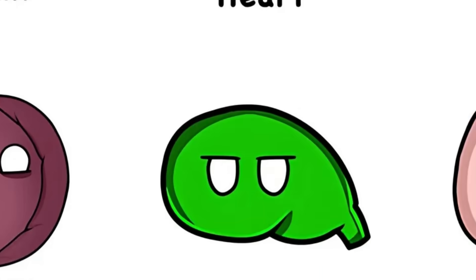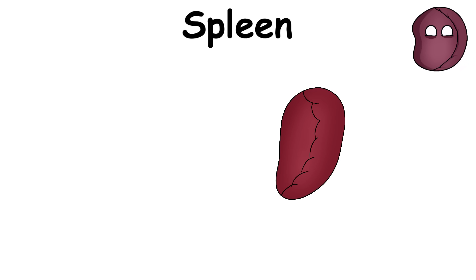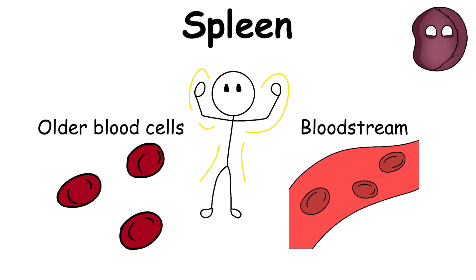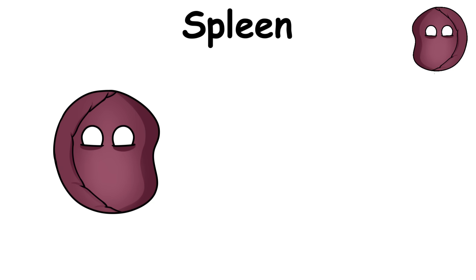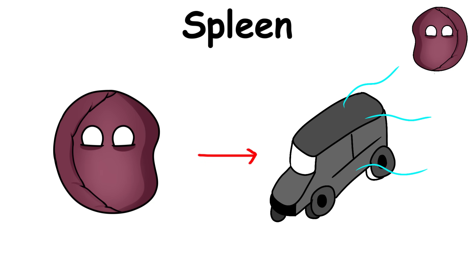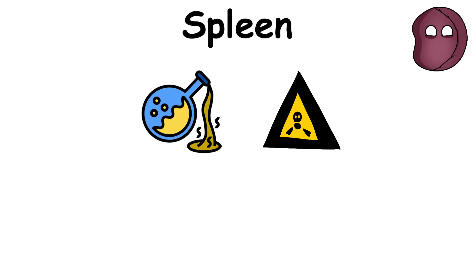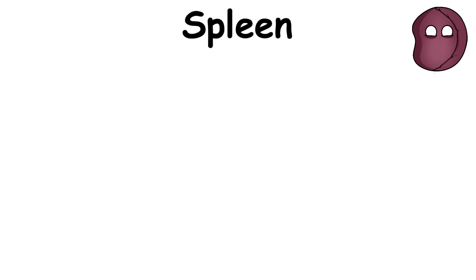The spleen is an organ found in the upper part of the belly. Its major role is to protect the body by removing older blood cells and other foreign objects from the bloodstream. Basically, the spleen is similar to your car's air filtration system, which filters foreign substances and harmful fumes. Instead, the spleen removes old and damaged cells and ensures that only healthy blood circulates in your body.